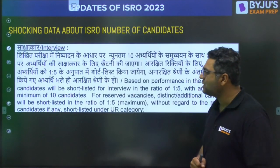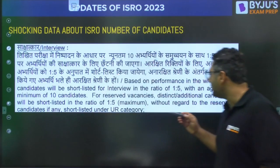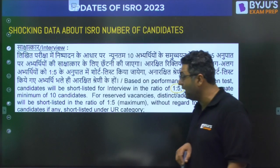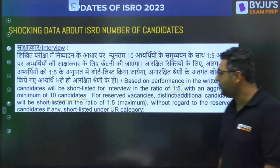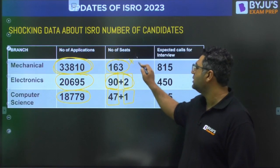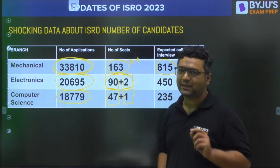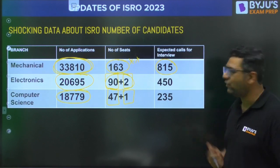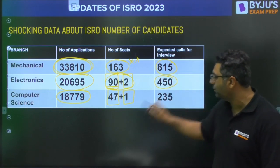Now let us look at the notification. They have mentioned that based on written test performance, they will be calling candidates in the ratio of 1 is to 5, with a minimum of 10 candidates. So for the 163 Mechanical posts, we can expect 815 candidates to be called. Similarly, for the 90 Electronics seats, 450 should be the expected number.